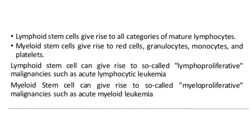Lymphoid stem cells can give rise to lymphoproliferative malignancies such as acute lymphocytic leukemia; normally they give rise to all categories of mature lymphocytes. Myeloid stem cells can give rise to myeloproliferative malignancies such as acute myeloid leukemia; normally they give rise to red blood cells, granulocytes, platelets, and monocytes.